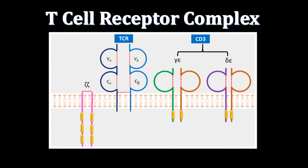In summary, the T-cell receptor is actually a complex of proteins. The alpha and beta proteins of this complex perform antigen recognition but cannot signal on their own. For signaling, the gamma, delta, epsilon, and zeta proteins are present — they initiate the intracellular signaling pathway after antigen recognition by the T-cell receptors.